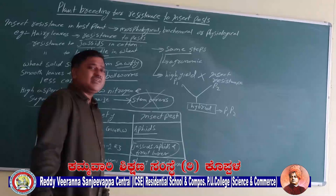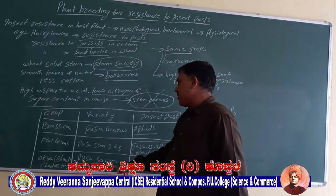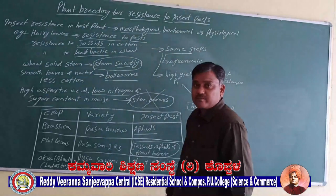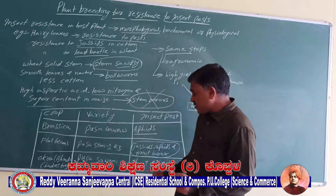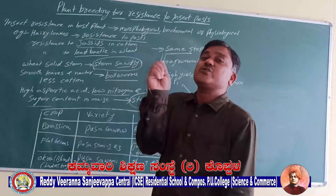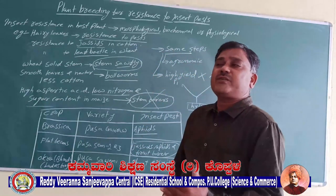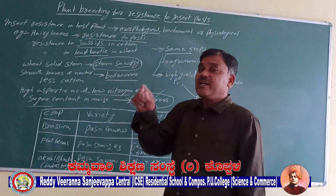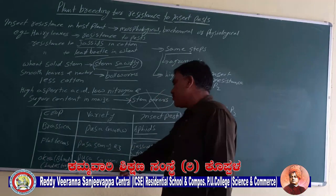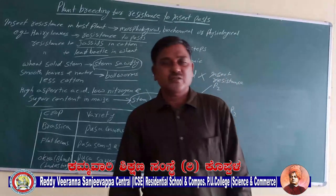The last example is Okra, also called Bhindi or Lady's Finger. The variety Pusa Sawani was sensitive to shoot and fruit borers. These insects used to attack both the stem and the fruits, decreasing crop yield. But by identifying a pest-resistant character and applying it to Pusa Sawani through plant breeding, it is now resistant to shoot and fruit borers.